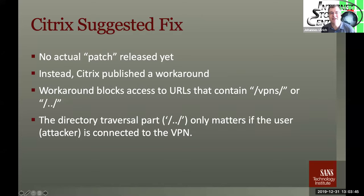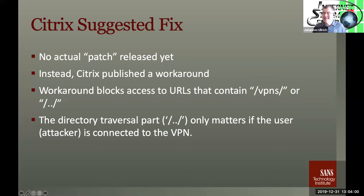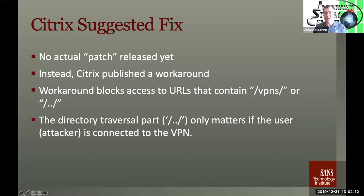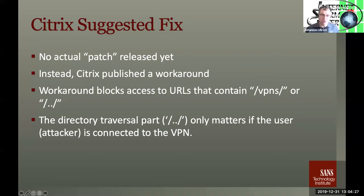Citrix came up with a suggested fix — it's not a patch. Really, all it does is block certain URLs from being accessed, most notably URLs that contain slash VPNS slash. This essentially covers part of the admin functionality of Citrix. It also covers the dot-dot directory traversal part, but actually the dot-dot part only really matters according to this rule if the user is connected to the VPN. If the user is not connected to the VPN, Citrix's rule only looks for the string VPNS — not for the actual directory traversal part.